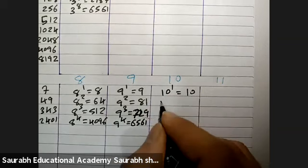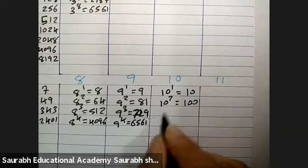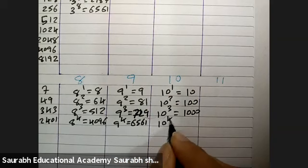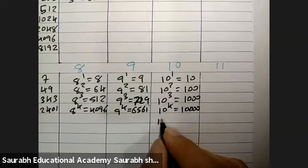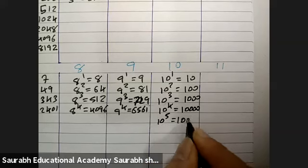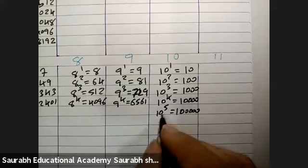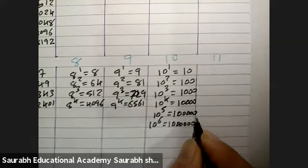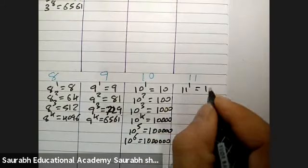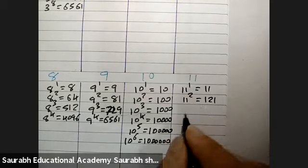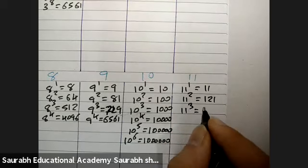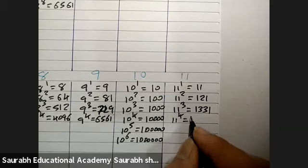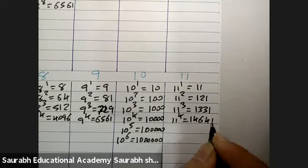Now, 10 raise to 1 is 10, 10 raise to 2 is 100, 10 raise to 3 is 1000, 10 raise to 4 is 10,000, 10 raise to 5 is 1 lakh, 10 raise to 6 is 10 lakh. 11 raise to 1 is 11, 11 raise to 2 is 121, 11 raise to 3 is 1331, 11 raise to 4 is 14641.